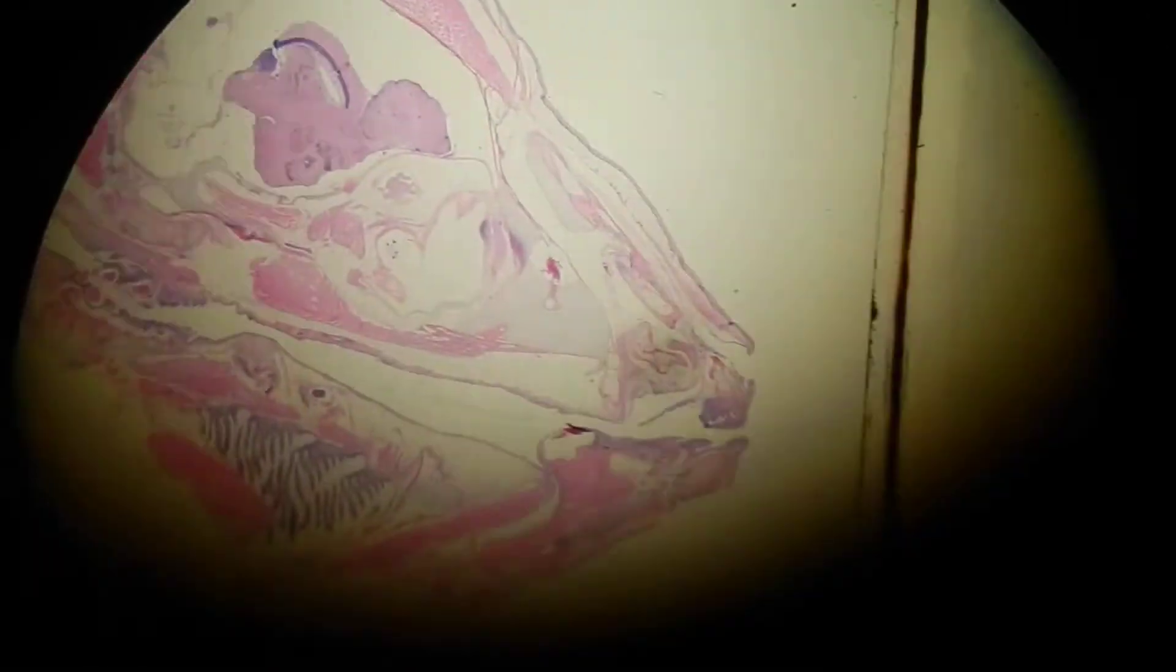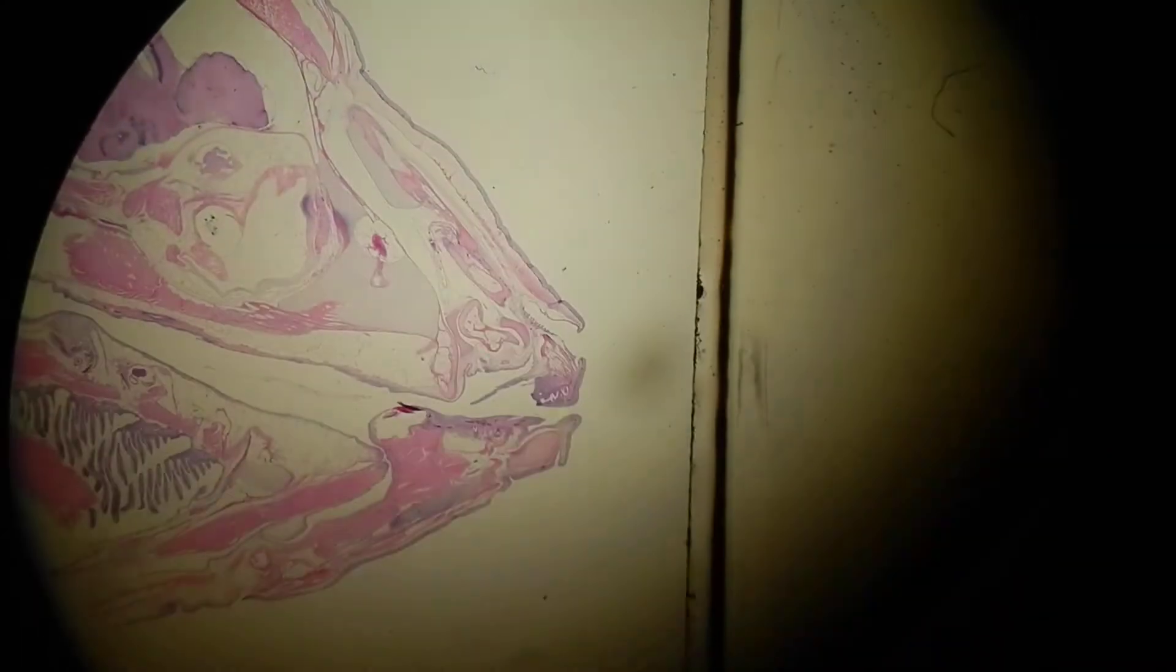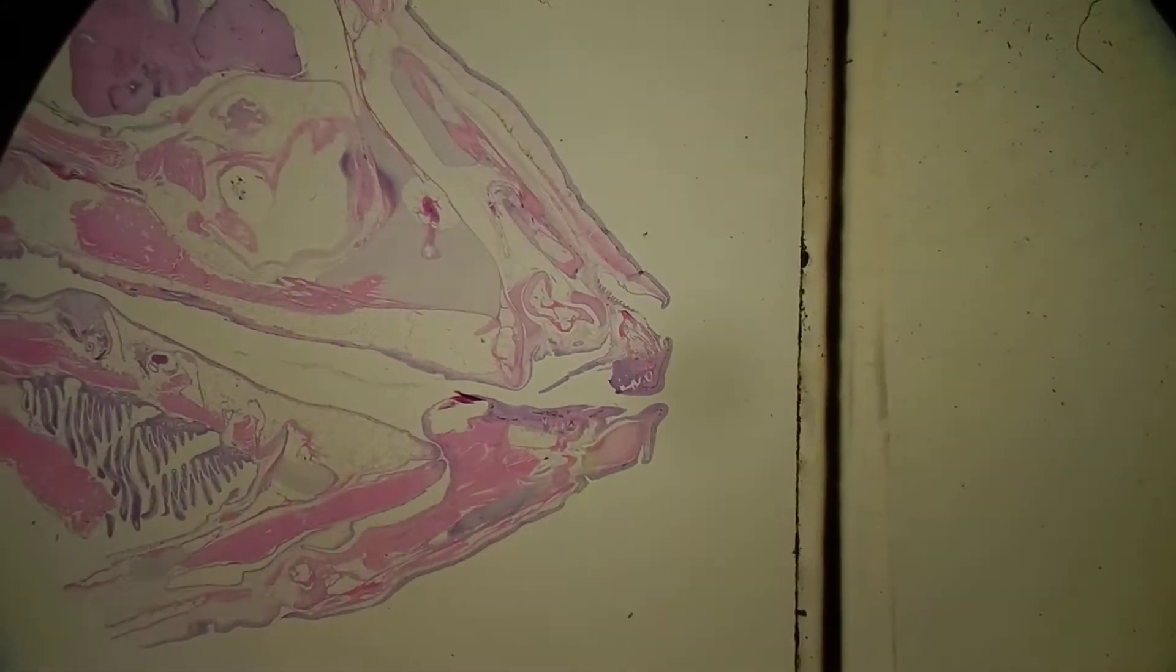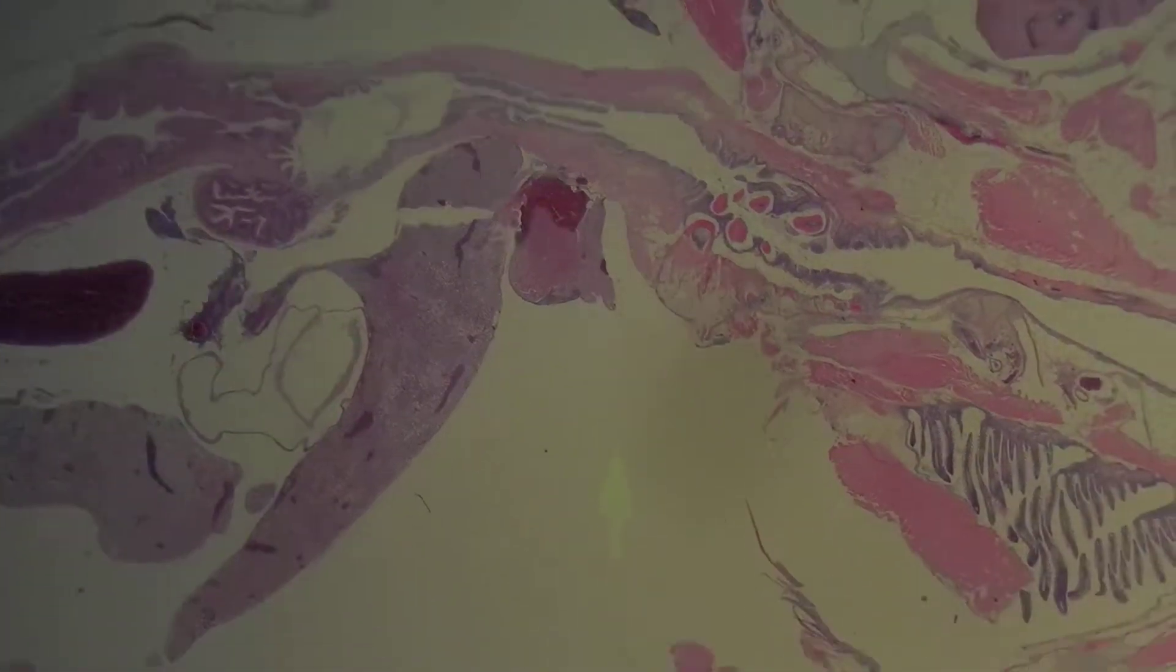And if you notice here, actually in the mouth we've got teeth in the jaws. Plus also you'll notice that this guy also has pharyngeal teeth, so he's got like two sets of teeth. Imagine having that in your throat.